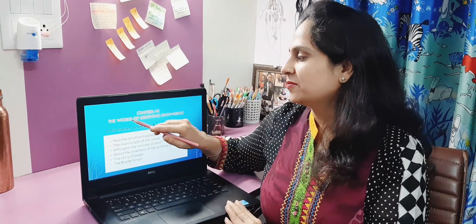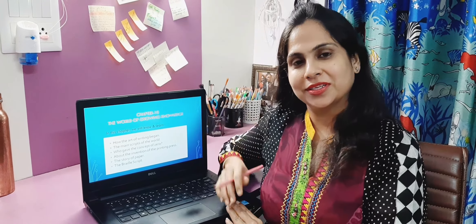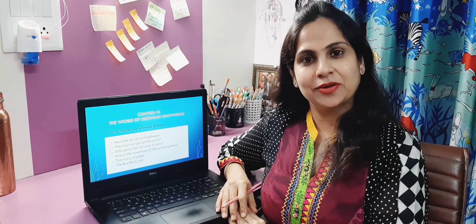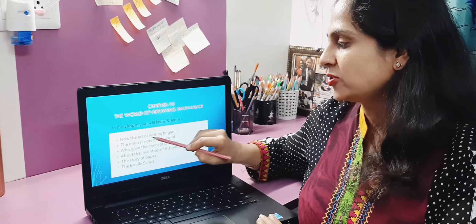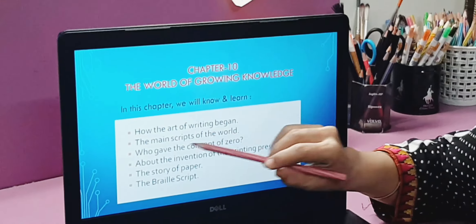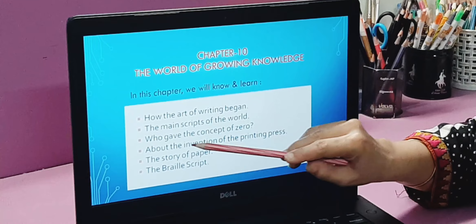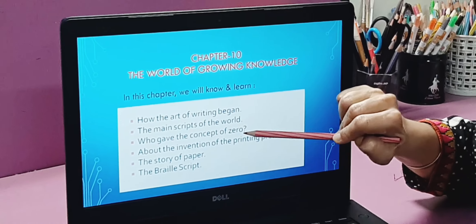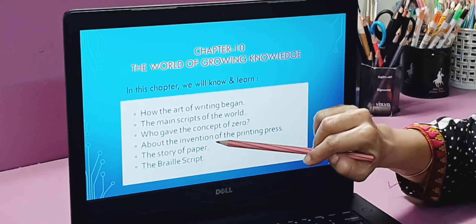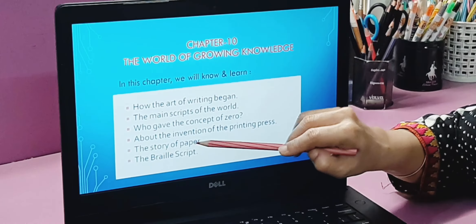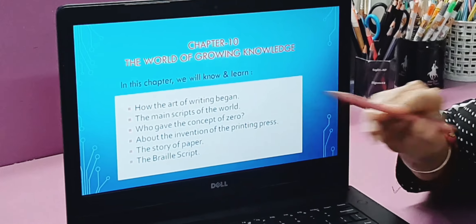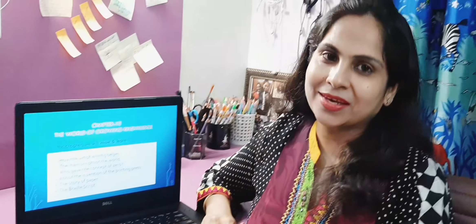Students, today our topic of discussion is the world of growing knowledge. This is chapter number 10 of your SST book. In this chapter, we will know and learn how the art of writing began, the main scripts of the world, who gave the concept of zero, about the invention of the printing press, the story of paper, and the Braille script.